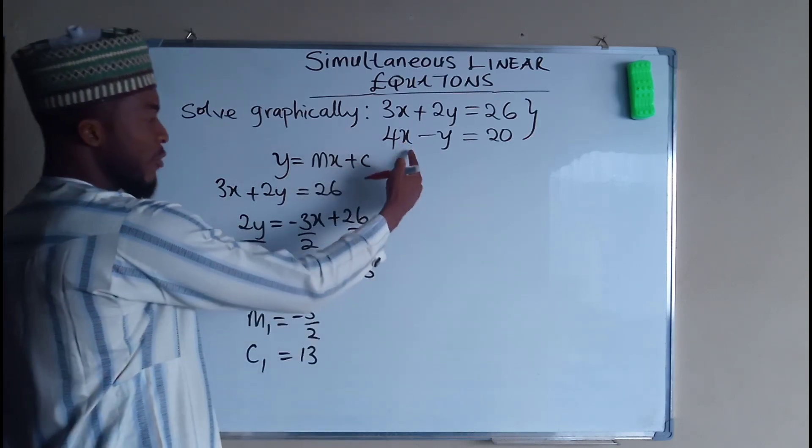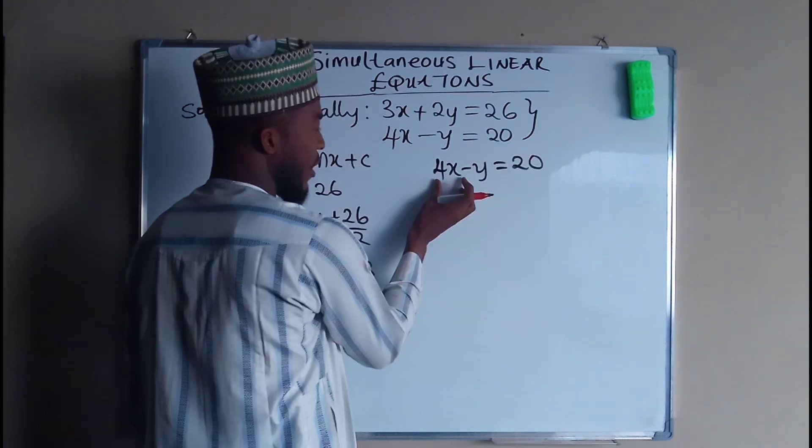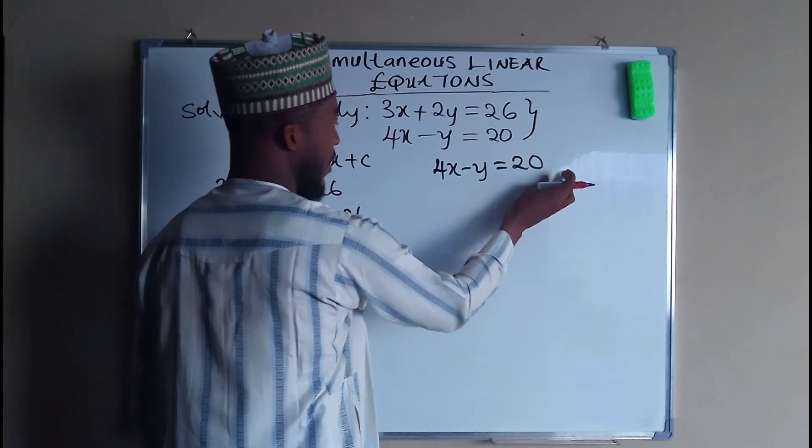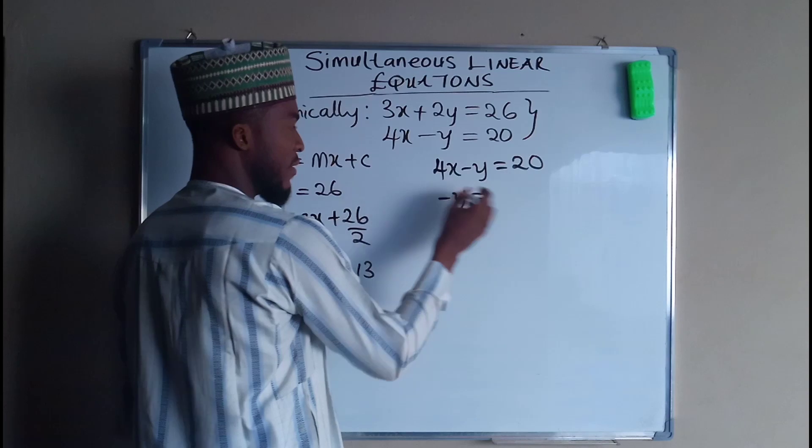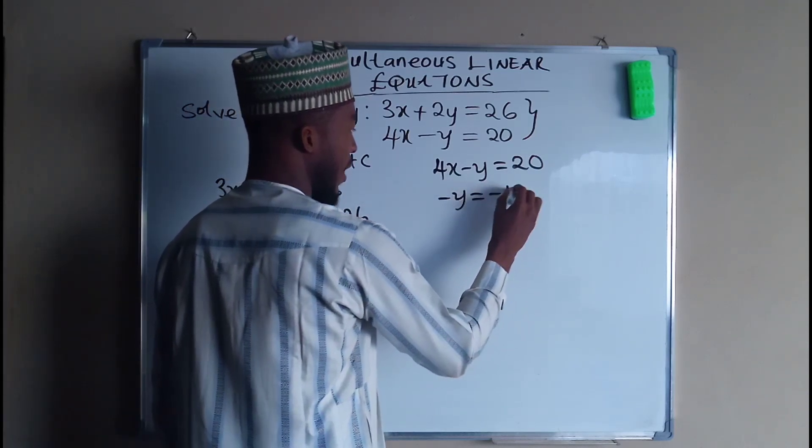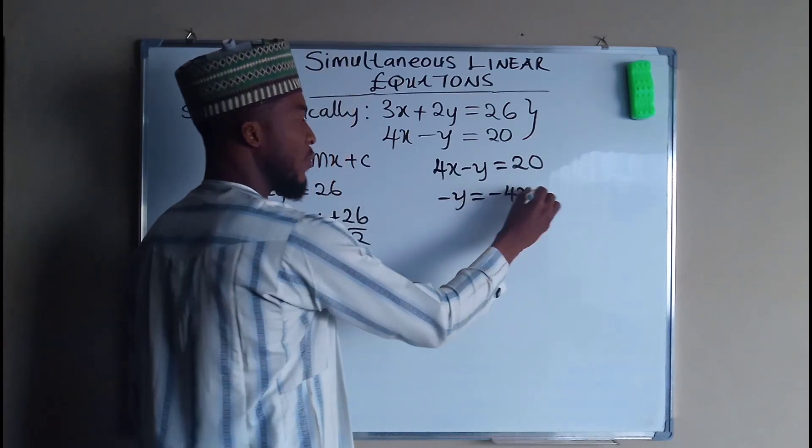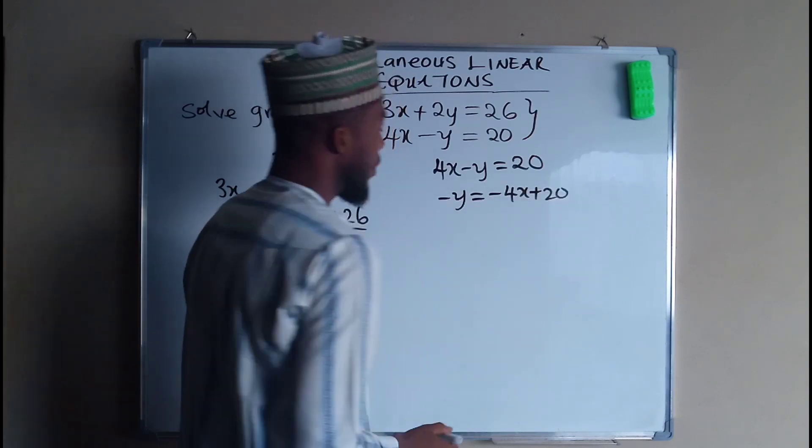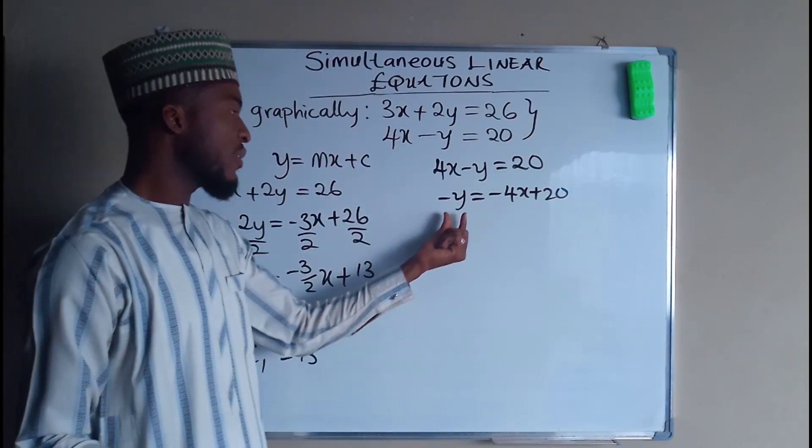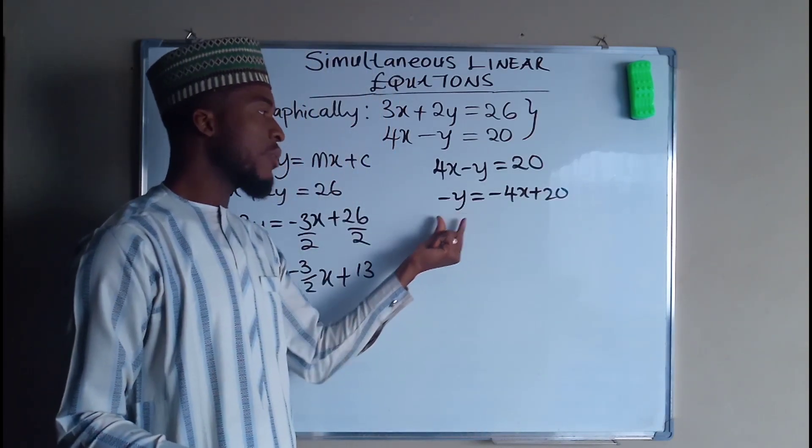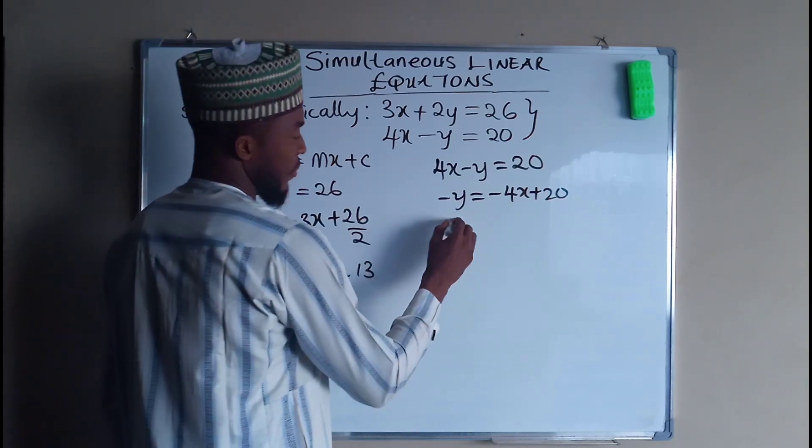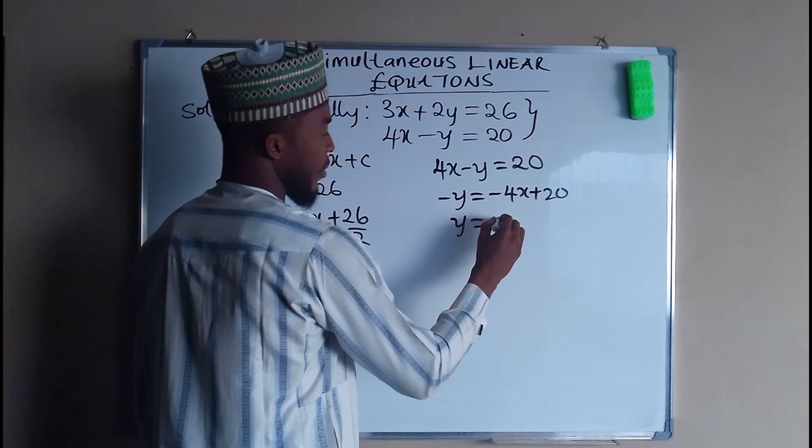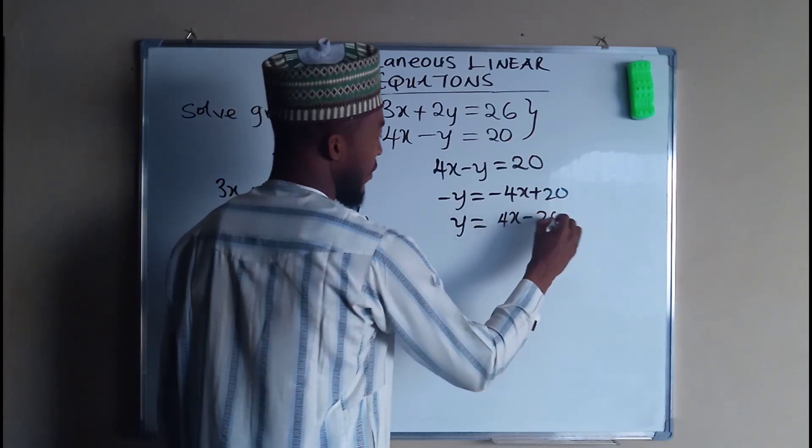Then for the equation number 2, if you take 4x to the right-hand side, you are left with only negative y to be equal to negative 4x, then plus 20, which is already there. Then because we are only interested in knowing what is y, we need to divide each of these terms by negative. So y now equals positive 4x minus 20.